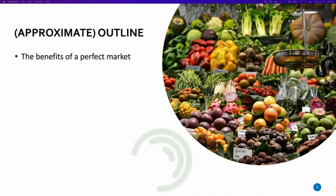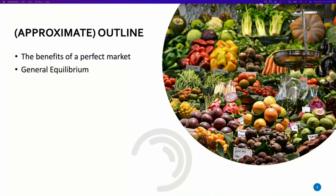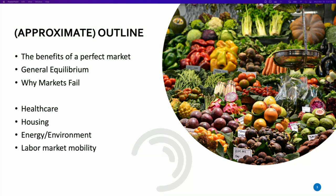What we'll roughly cover is: first, a quick primer on the overall policymaking process in the US — that's where my background is, so this will be a US-centric discussion. Then we'll go through some market fundamentals, the Econ 101 story of markets and how they work and how they fail, because that's where you get the interaction between public policy and economics. Then we'll run through a couple of specific industries: healthcare, housing, energy and environment, and labor markets, followed by wrap-up and Q&A.